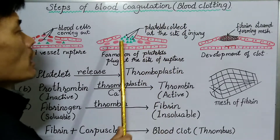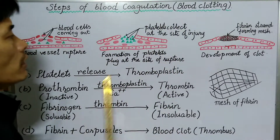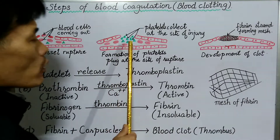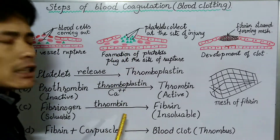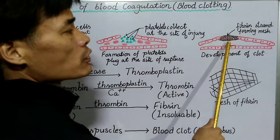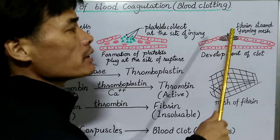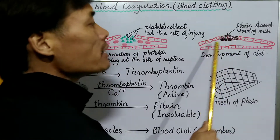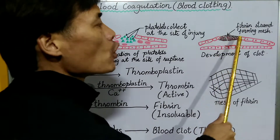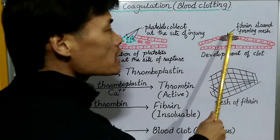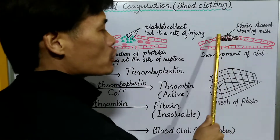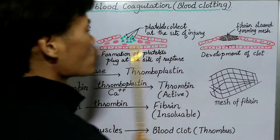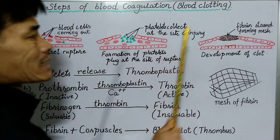When there is a rupture in the blood vessel, the platelets come to the point of rupture. As soon as the platelets arrive, a number of chemical reactions take place and finally a plug is formed at the point where there is a rupture. As soon as this plug is formed, the blood stops oozing out from the zone where the blood vessel has got ruptured. This plug which is formed is called a clot.